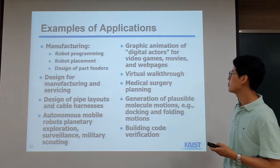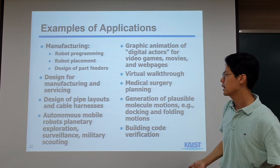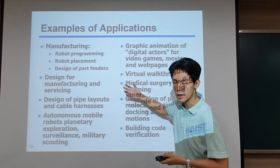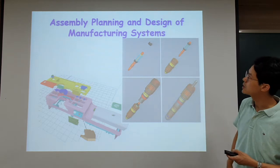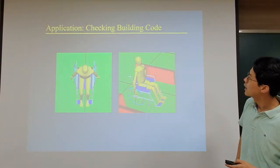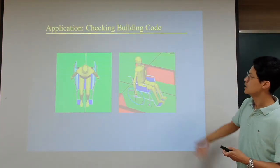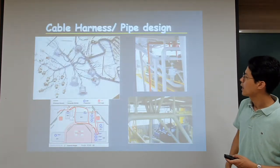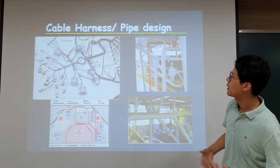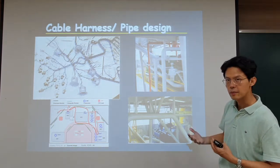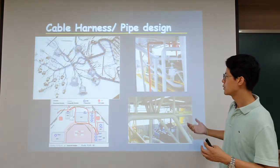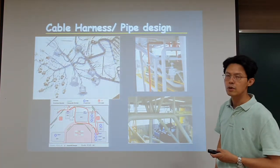There are many applications. We can apply this concept in manufacturing through robot programming and robot placement. This is an example of assembly planning — assembling different parts to build larger components. We can also use virtual robots to check building codes and access codes. In large-scale architecture or devices, there are many cables and pipes that are difficult to lay out, so we can think about automatic approaches, which are also related to motion planning.